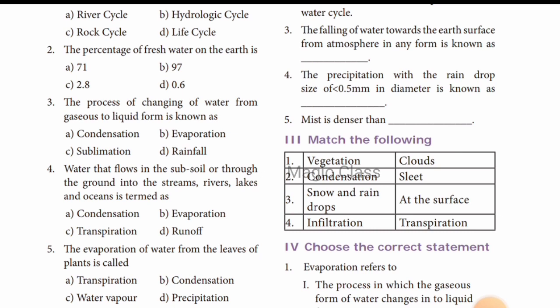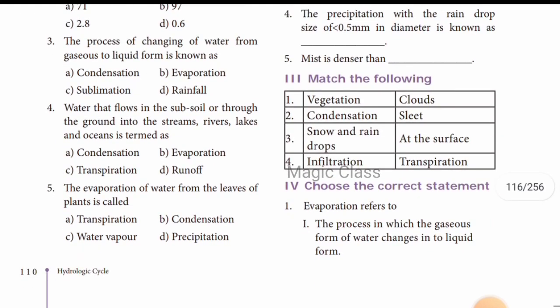Question number 3: the process of changing water from gas to liquid state. Water goes through the subsoil or through the ground into streams, rivers, and lakes. These involve runoff, and the cycle involves spring, lake, ocean, and atmosphere.